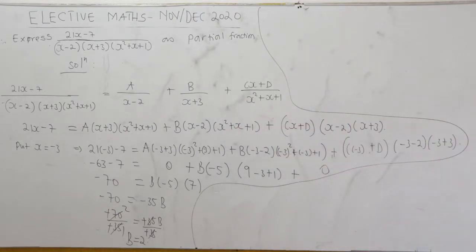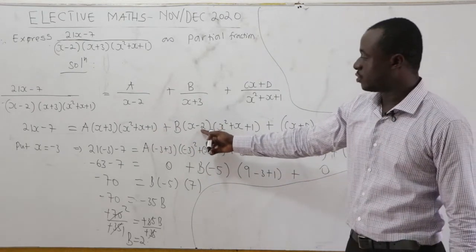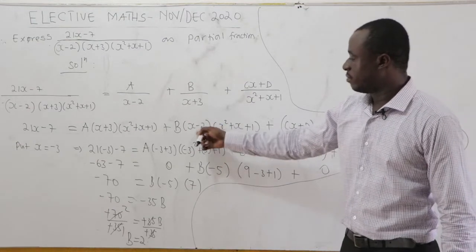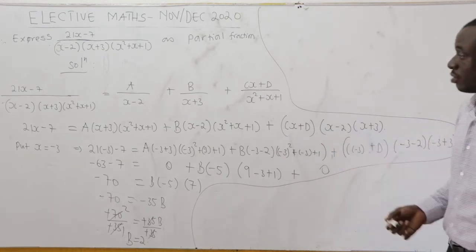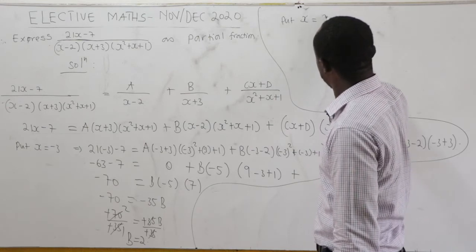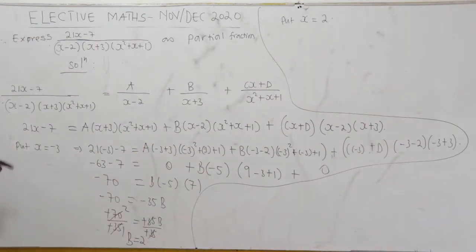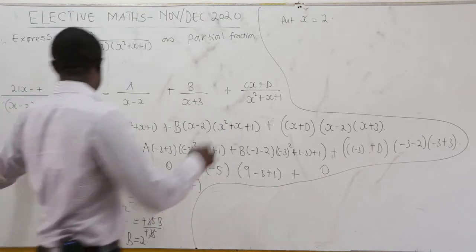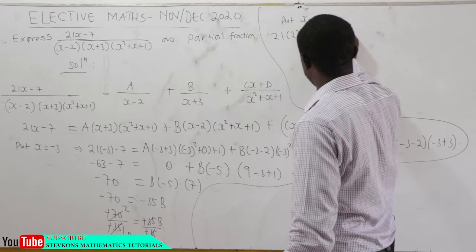Now using the cover-up method, put x equal to positive 2. When x equals 2, the B term vanishes because (x minus 2) equals zero, and the Cx plus D term also vanishes because (x minus 2) equals zero. So we substitute x equals 2 everywhere.